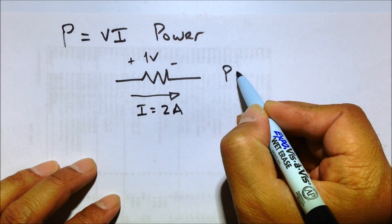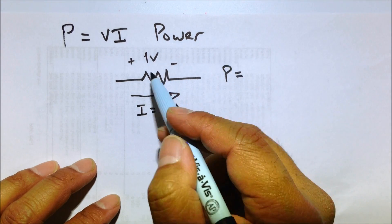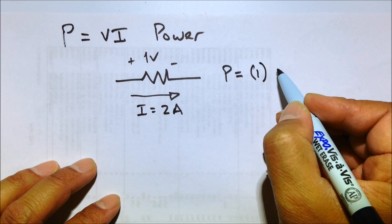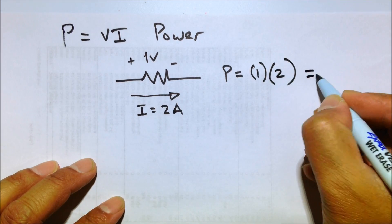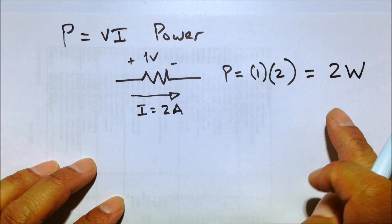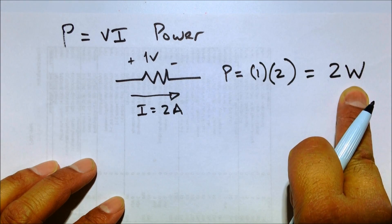So we're going to use our power equation. P equals V, in this case one volt, times I, in this case two amps, and that gives us two watts because that's the unit for power.